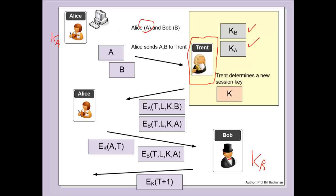Initially Alice contacts Trent and gives her identity and also the identity of Bob that she's trying to contact. So Alice will send A and B to Trent. Trent then finds the keys that are associated with Bob and Alice and then will generate a unique or random key which will be implemented within the session between Bob and Alice. Trent also creates a timestamp for the current time to define a lifetime for the amount of time the key and the identities will be valid for, and then will encrypt that with Alice's shared key.